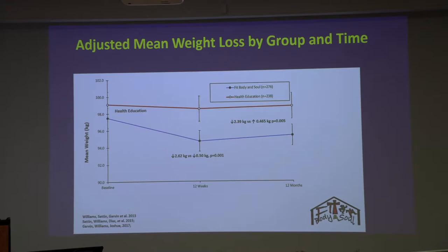At 12 months, the intervention group had lost 2.39 kilograms, while the comparison group had started to trend upward, gaining 0.46 kilograms. That's significant for a community-based adaptation of a clinical program. The weight loss goal was 5 to 7 percent of total body weight, and on average the clinical trial saw about 4 kilograms of weight loss — so we were very close. We also had over a 90% retention rate.